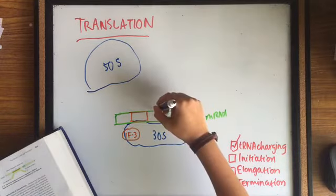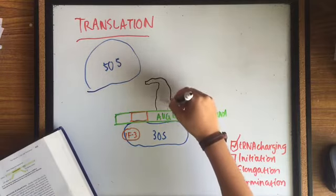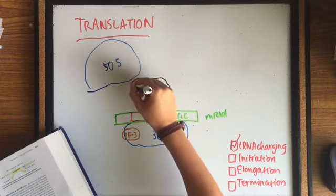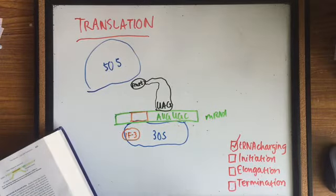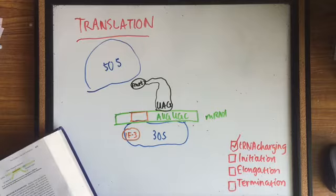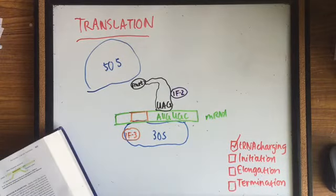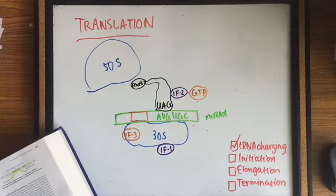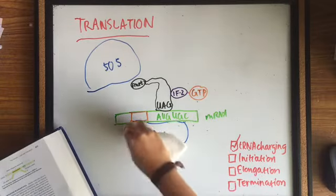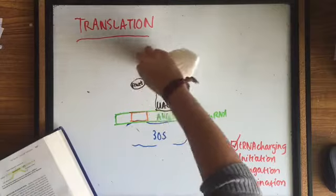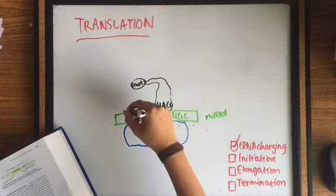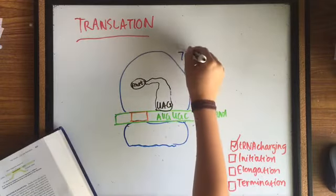A tRNA charged with N-formyl methionine forms a complex with initiation factor 2 and GTP, which binds to the initiation codon, while initiation factor 1 joins the small unit in order to enhance the dissociation of the large and small ribosomal subunits. Then all the initiation factors dissociate from the complex and GTP is hydrolyzed to GDP, and the large subunit joins to create a 70S initiation complex.